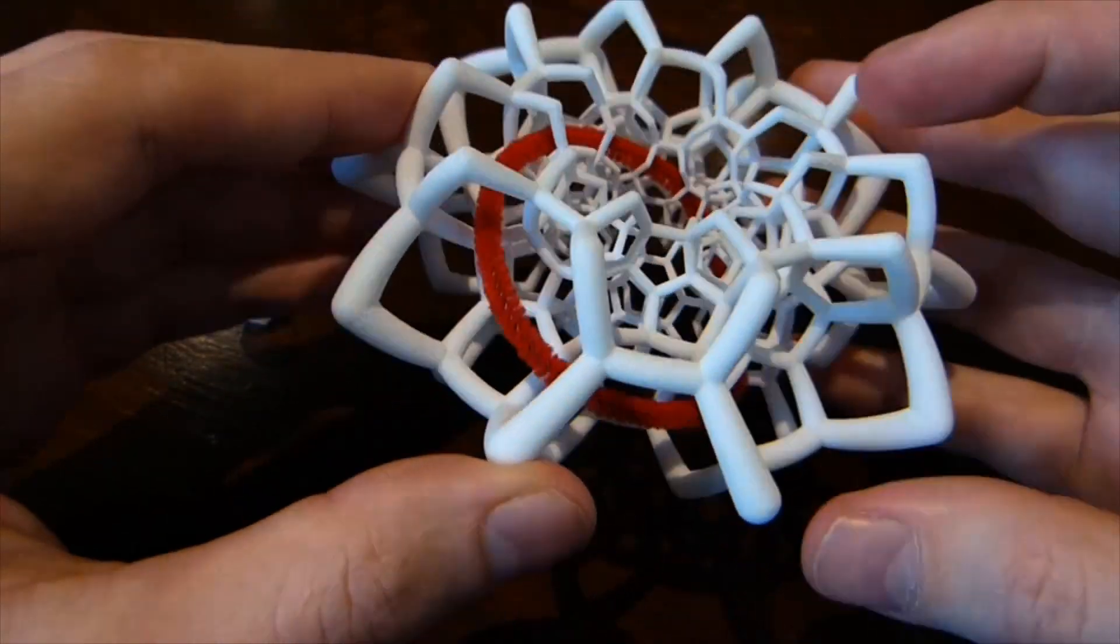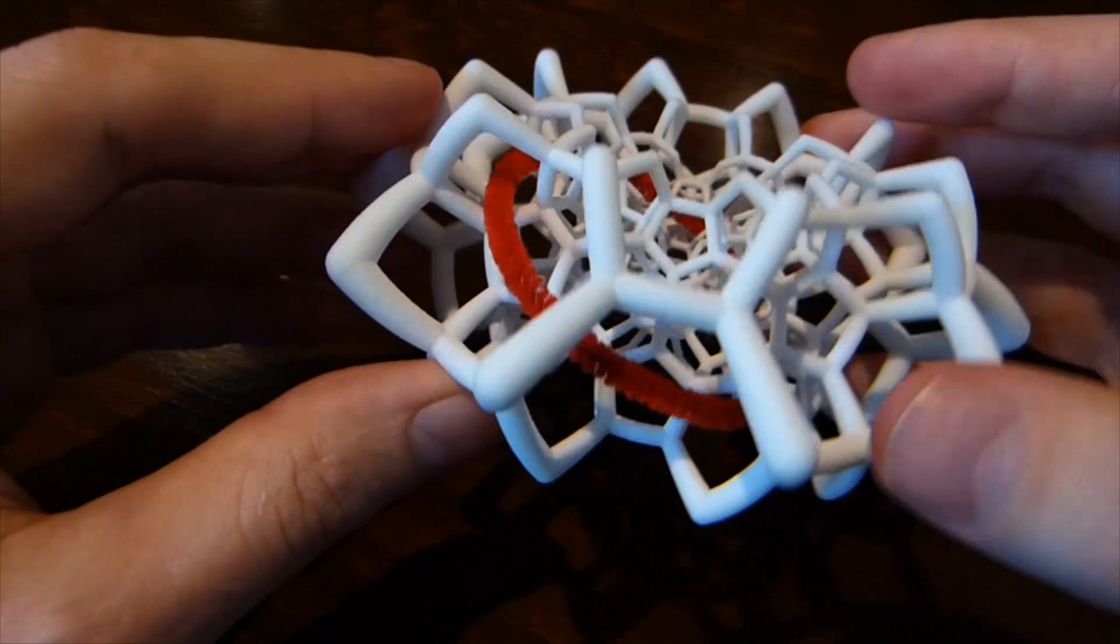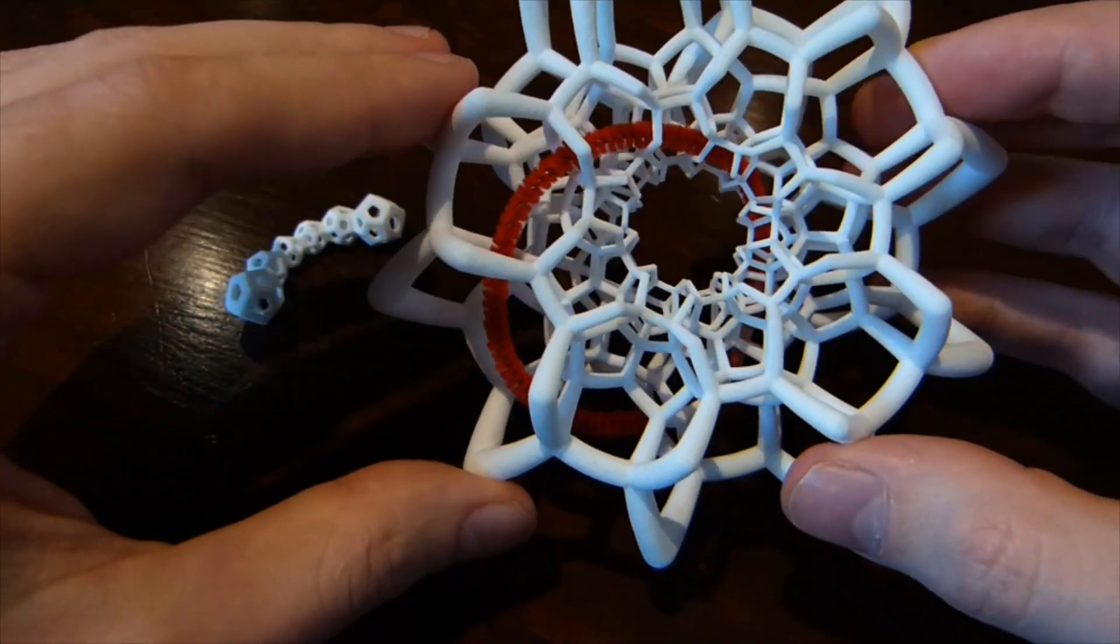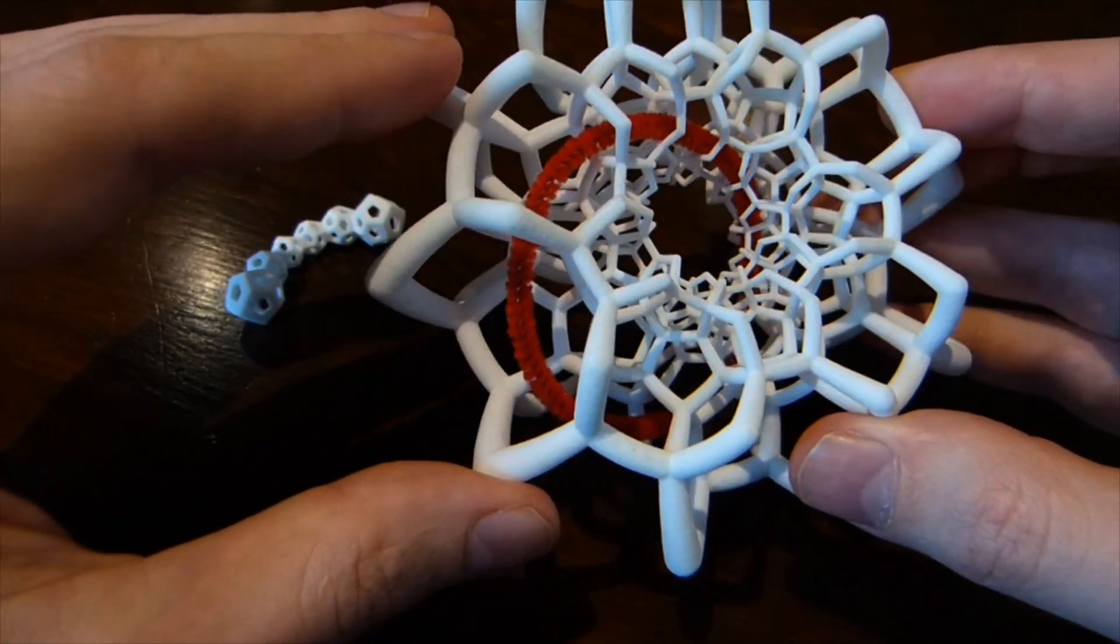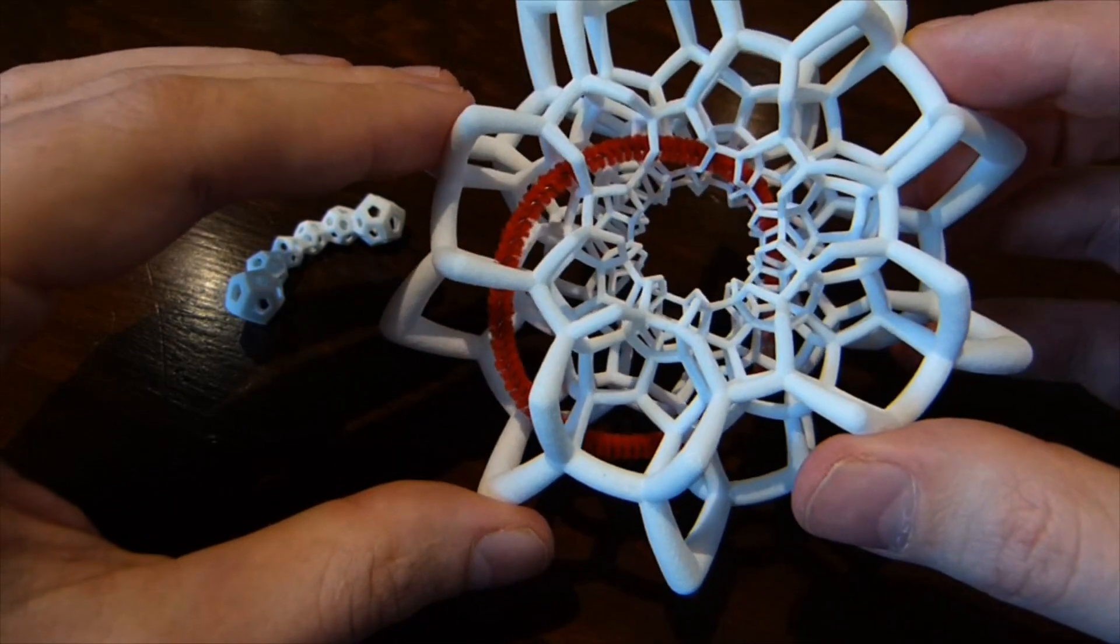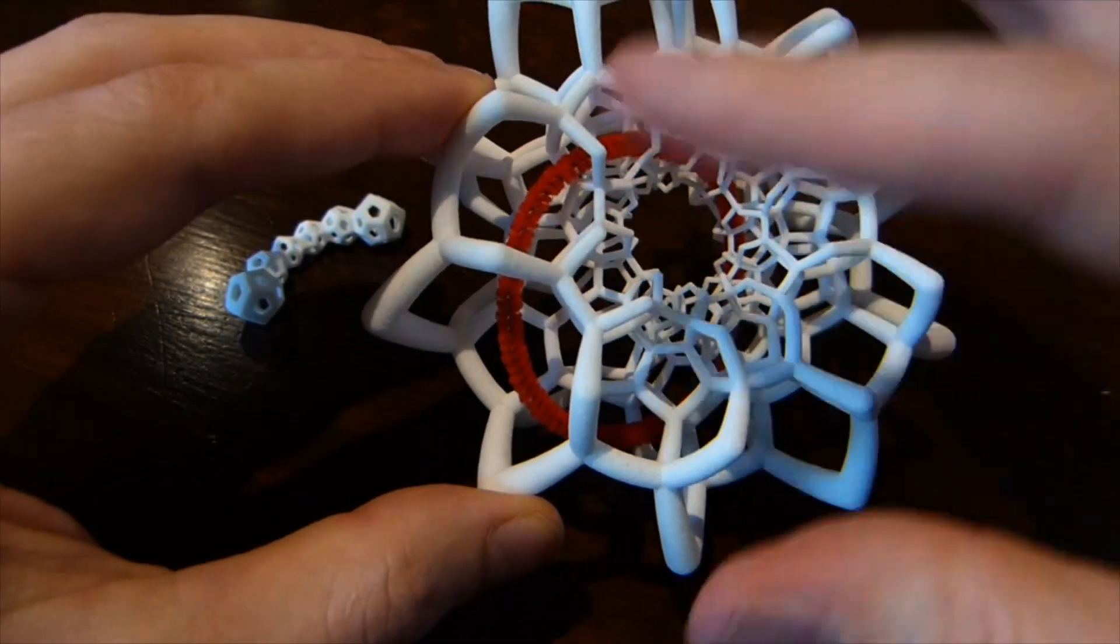And it turns out that if you do this, you eventually come back around to where you started after passing through 10 dodecahedra. So there are these chains of 10 dodecahedra that sort of go around like this.